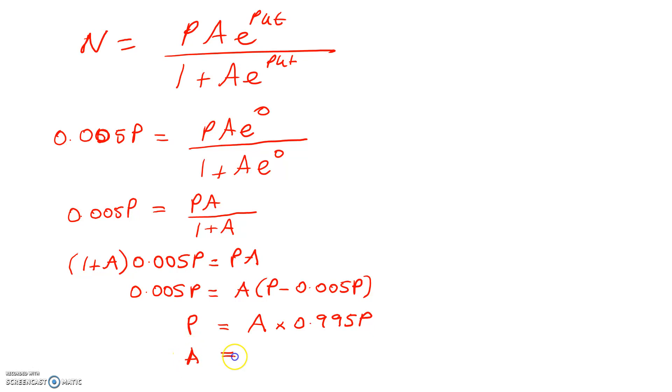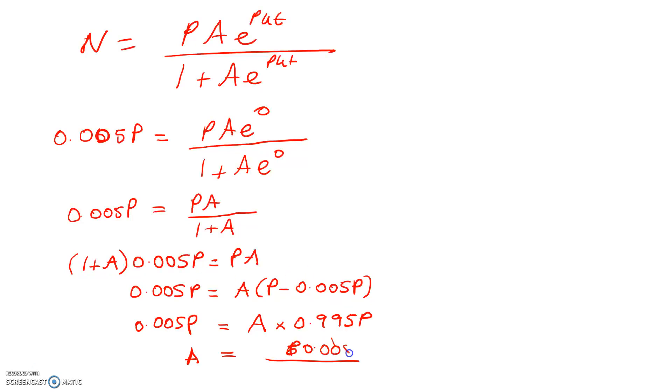In the end that gives me PA equals 0.005P divided by 0.995. That looks horrible until you remember that A is just equal to 5 over 995, or you could reach for your calculator, but I wouldn't do that. You're better to see it as a fraction. So A equals 1 over 199. That's good, we've got the first thing solved.